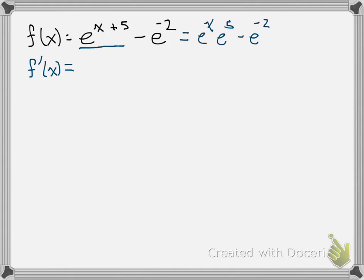And if we wanted to, we could reverse the order on that first part and write it as e to the fifth times e to the x minus e to the negative 2.